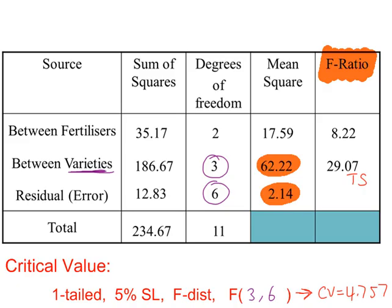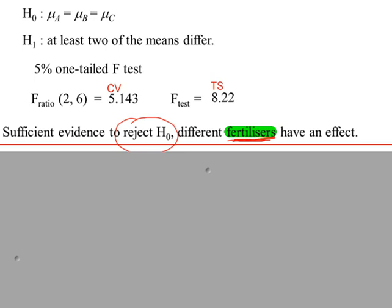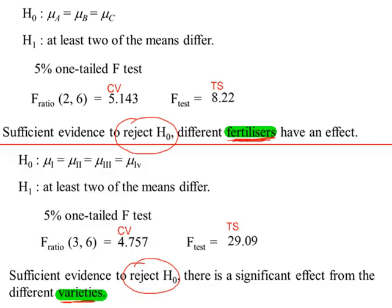If the test value is greater than the critical value, we will reject H0. For the fertilisers, for this factor, the test value is greater than the critical value, we reject H0. Conclusion in context. And for the varieties, our second factor, the test value is greater than the critical value, again, we reject H0. And our conclusion in context.